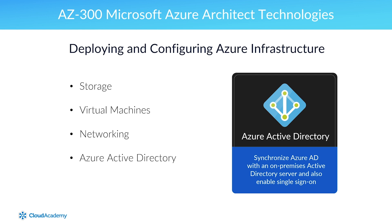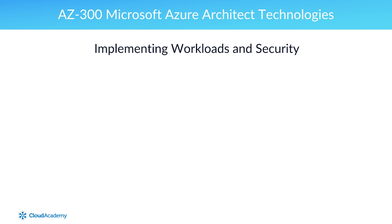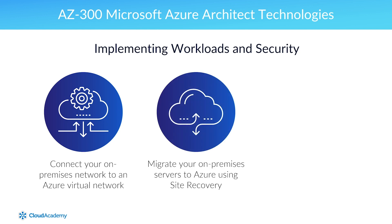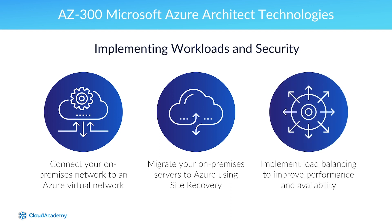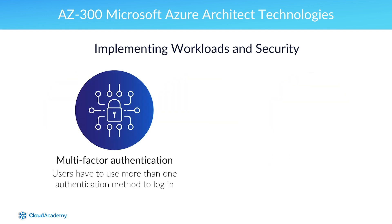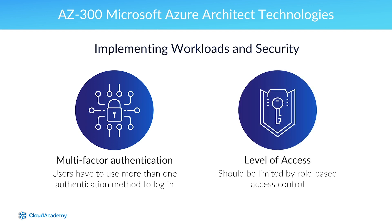The next section is on implementing workloads and security. You'll learn how to connect your on-premises network to an Azure virtual network, and how to migrate your on-premises servers to Azure using Site Recovery. Once you have applications in Azure, you'll usually want to implement load balancing, which helps improve both performance and availability. In the security area, you'll learn how to make it harder for hackers to get in by using multi-factor authentication, and also how to limit each user's access level to only as much as they need by using role-based access control.